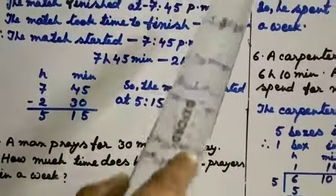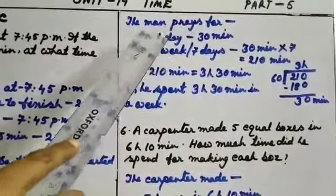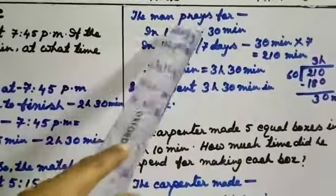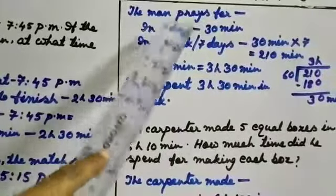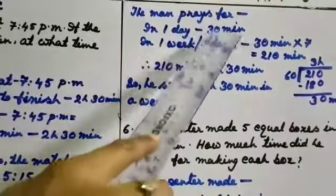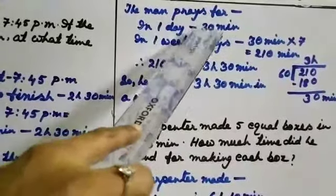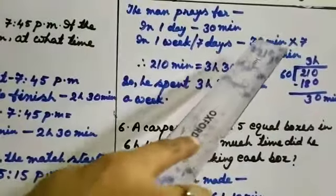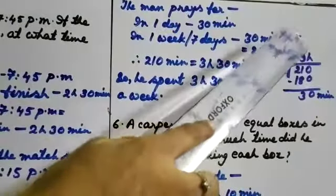So you see here the answer. How you will write? You will write: the man prays for, this is the headline. In 1 day for 30 minutes. You can write for 30 minutes or you can write in 1 day hyphen 30 minutes. So in 1 week or 7 days, 30 minutes multiplied by 7 more hours. So if you multiply you are getting 210 minutes.